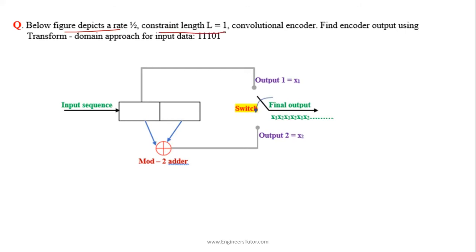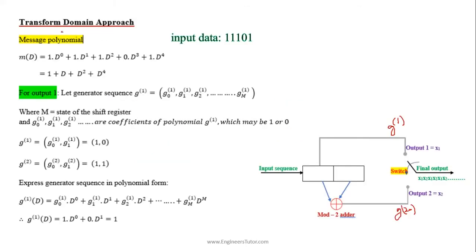We try to solve this problem using the transform domain approach. The problem asks: for a constraint length 2 convolutional encoder, find the encoder output using the transform domain approach for the given input sequence 1 1 1 0 1. The constraint length is 2, so the first flip-flop holds the message bit and the second flip-flop represents the state of the encoder. In the transform domain approach, both the input messages and the generator sequences are expressed in terms of polynomial equations.